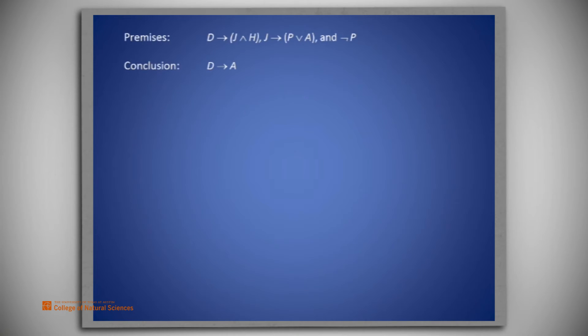So, suppose we do have the premise D. We see from the first premise that we would be able to conclude J and H. In particular, then we would have J. But then, from the second premise, J implies P or A, we would have P or A. And finally, from the last premise, not P, we would have A.